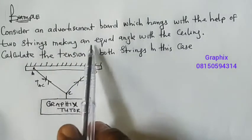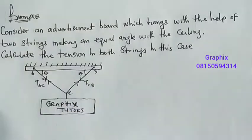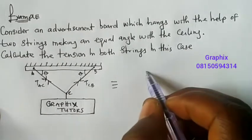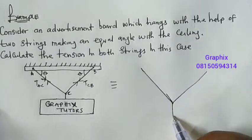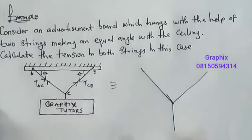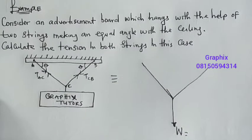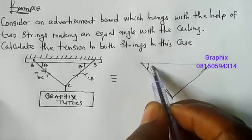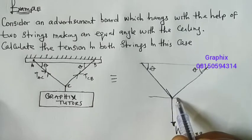It says both strings make an equal angle with the ceiling, so let's say the angle is theta here and theta here. Now let us draw this in our free body diagram. In the free body diagram, the board is carrying a weight W acting downward, so W equals mg — mass times gravity. This is the ceiling, and there's an angle theta at each side of the ceiling.